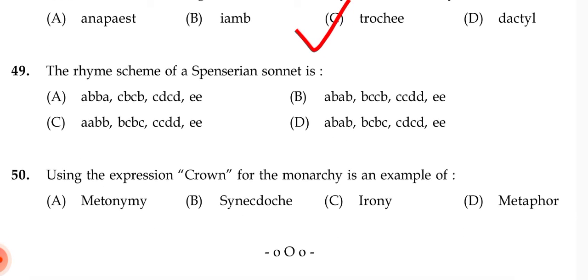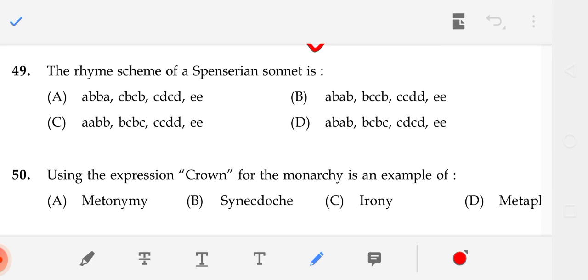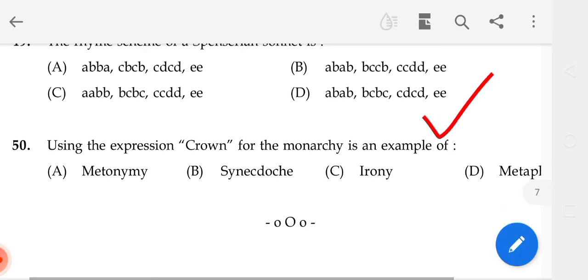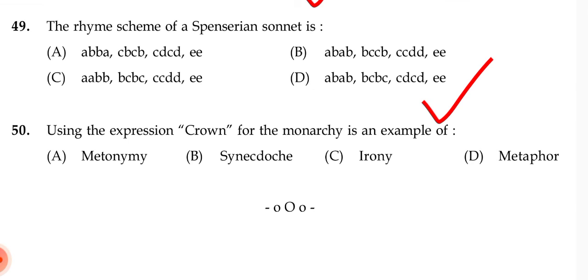Question 49: The rhyme scheme of the Spenserian sonnet is — the correct answer is D — ABAB BCBC CDCD EE.